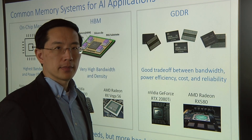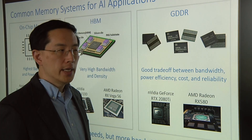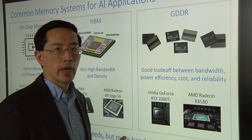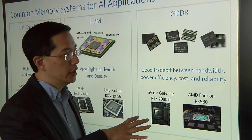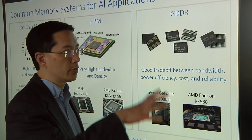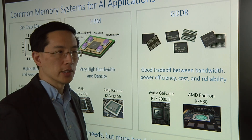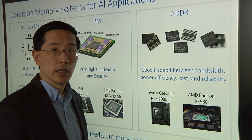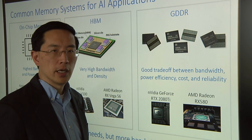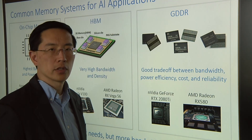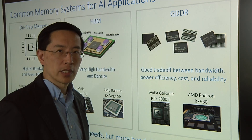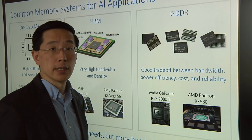No matter what you choose, you're going to pay for it somehow. It's really a question of what your most important requirements are and how you trade them off. With GDDR, the challenge is moving signals at very high speeds between the processor and the DRAM — the challenge is primarily in signal integrity. With HBM, it's the complexity of assembling the system and the additional cost. But if you can tolerate it, it's a great solution. With on-chip memory, you get the highest bandwidths and best power efficiencies, but the question is whether the capacity is enough.